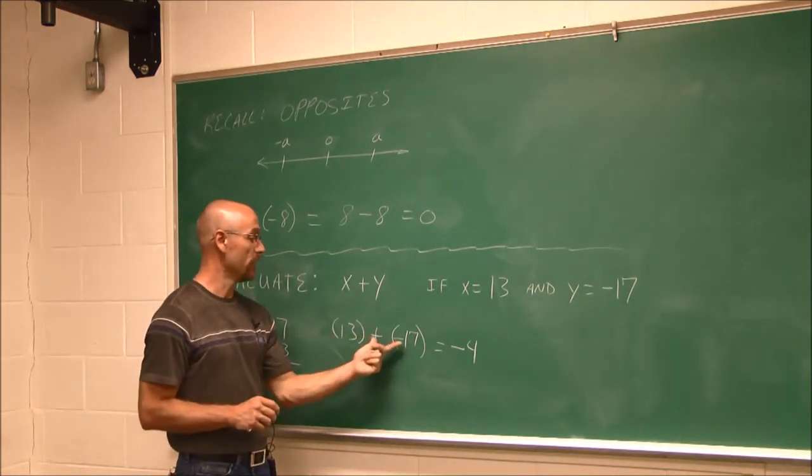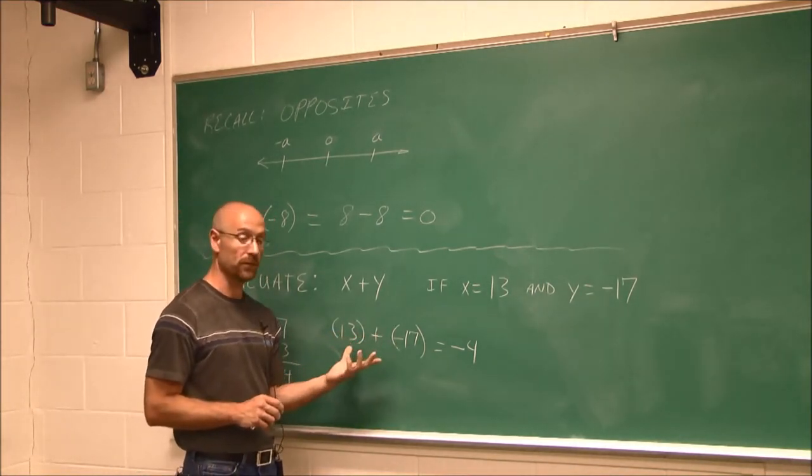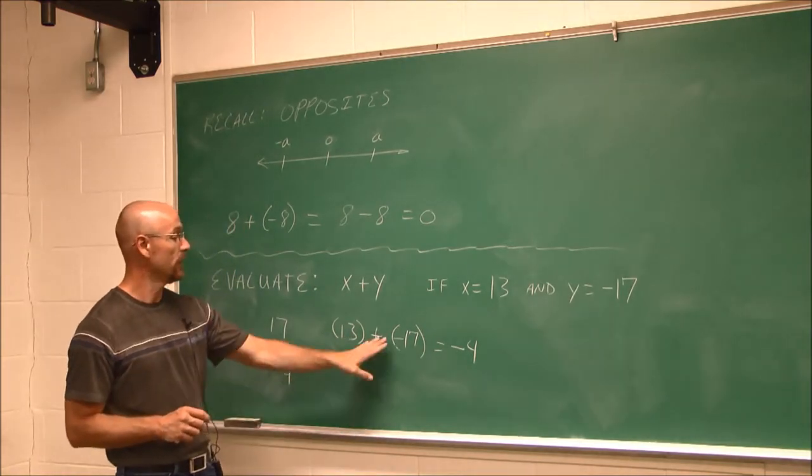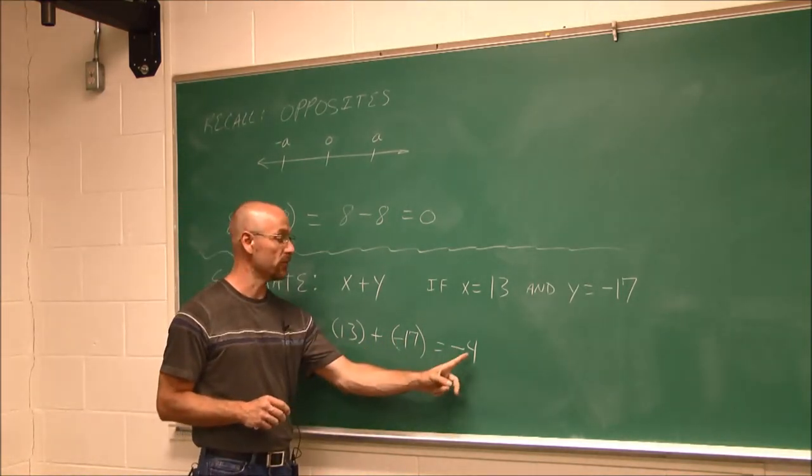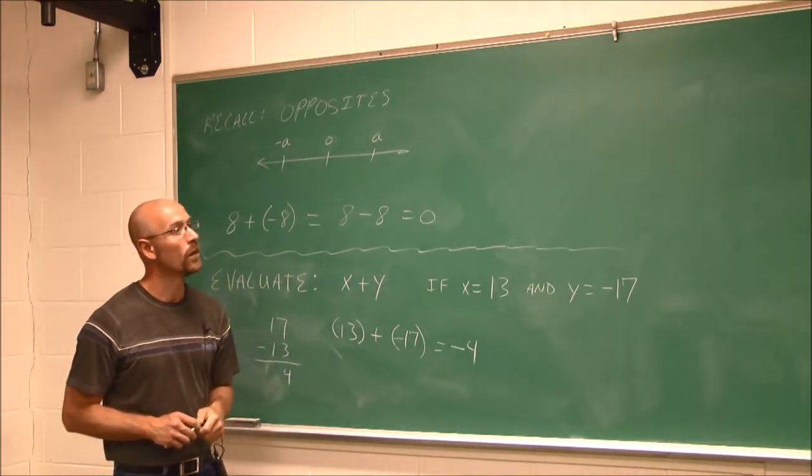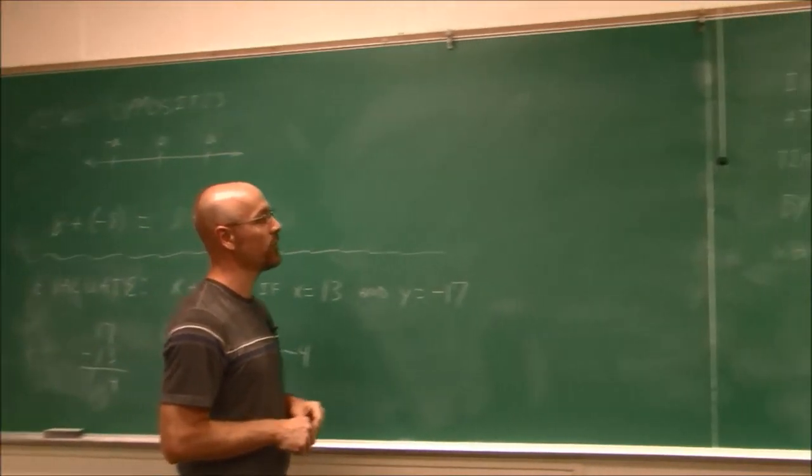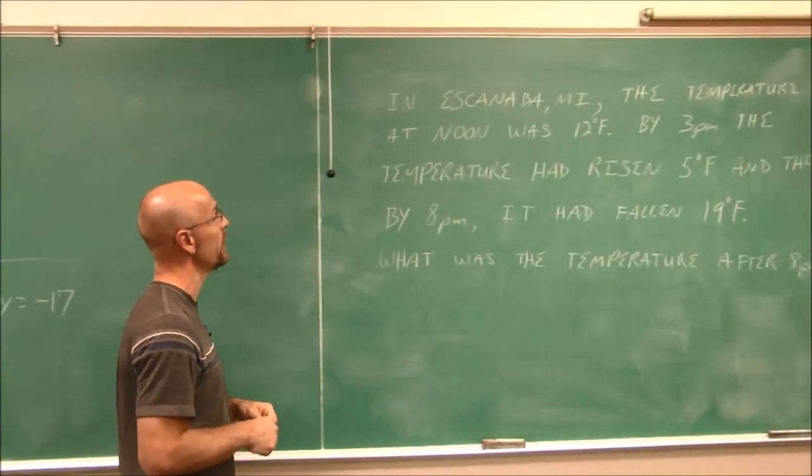The larger value will determine the sign. So we can say opposite signs find their difference, and the difference of these two is 4. It's a negative 4, and that's what we found here. All right, let's go to this board over here, and we're going to look at an application problem.